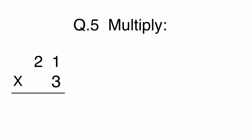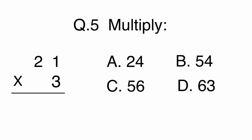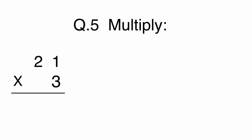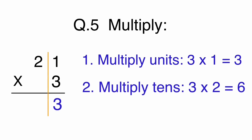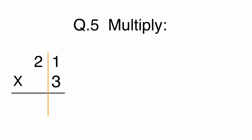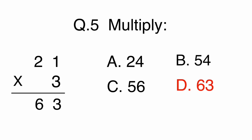Question 5. Multiply: 21 times 3 equals? A. 24. B. 54. C. 56. Or D. 63. Let's review the column multiplication method. First, you need to multiply the units: 3 times 1 equals 3. Then, we need to multiply the tens: 3 times 2 equals 6. The answer is D, 63.